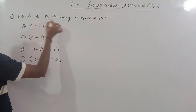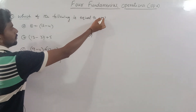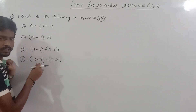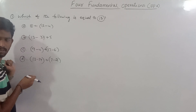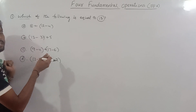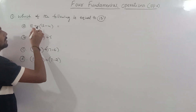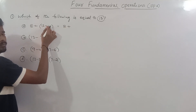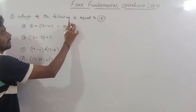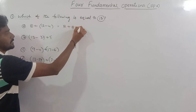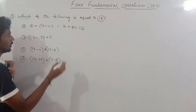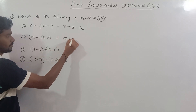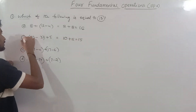First question: which of the following is equal to 15? If you want to say 15 is equal to 15, try it. First, 8 plus 12 minus 4 equals 8. So 8 plus 8 equals 16. Now, 13 minus 3 equals 10, plus 5 equals 15. This is the answer.